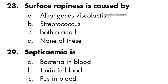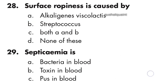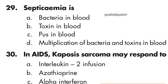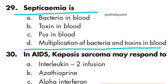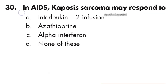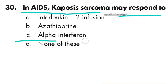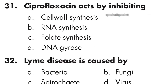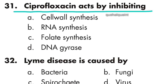Question 28: Surface ropiness is caused by Alcaligenes viscolactis. Option A is right. Question 29: Septicemia is the multiplication of bacteria and toxins in blood. Question 30: In AIDS, Kaposi's sarcoma may respond to alpha interferon. Option C is right.